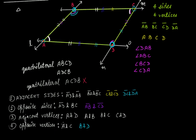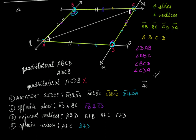Finally, diagonals always connect opposite vertices. If we take opposite vertices A and C and join them with a line segment, then line segment AC is a diagonal. Similarly, B and D are opposite vertices, and if we join them with a line segment, then BD is the other diagonal of this quadrilateral.